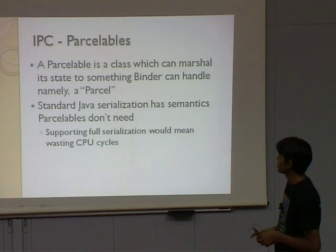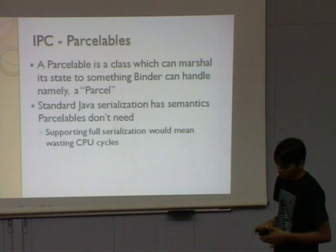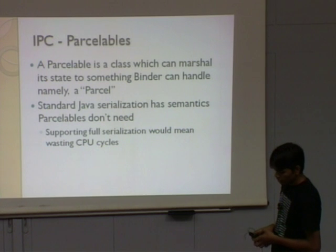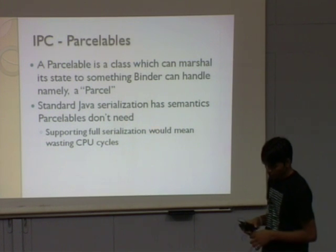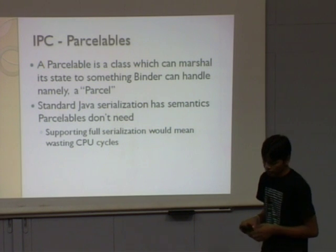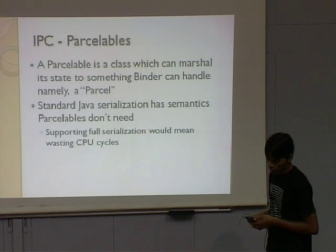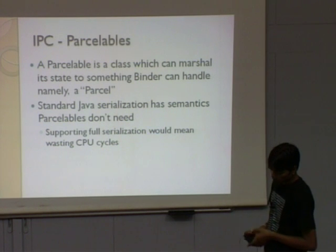IPC parcelable labels: a parcelable is a class which can marshal its state to something the binder can handle — namely a parcel. The standard Java serialization has semantics that parcelable does not need. Supporting full serialization would waste CPU cycles since Java serialization is a lot more complex. That is why we use parcelable instead.